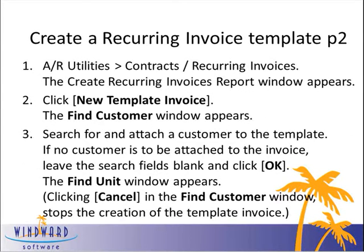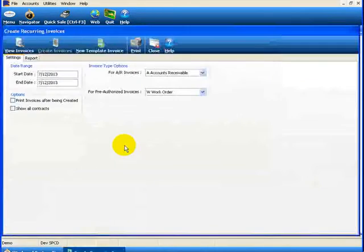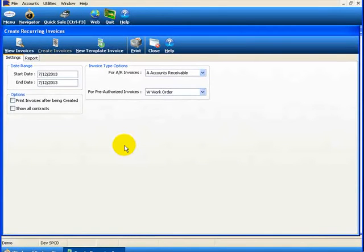Here are the steps. In the main navigator menu, find AR Utilities, Contract Recurring Invoices. By clicking on that, the Create Recurring Invoices report appears. I will click this in our demo here. Here is the Create Recurring Invoices window.